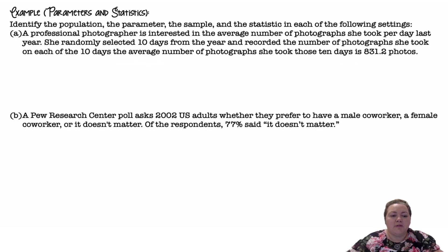An example. Identify the population, the parameter, the sample, and the statistic in each of the following settings. A professional photographer is interested in the average number of photographs she took per day last year. She randomly selects 10 days from the year and records the number of photographs she took on each of the 10 days. The average number of photographs she took those 10 days is 831.2 photos.